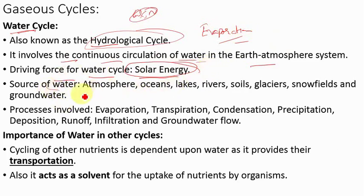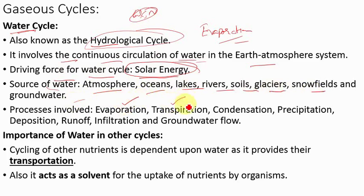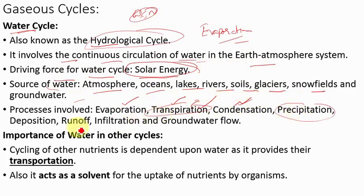The sources of water include the atmosphere, oceans, lakes, rivers, soils, glaciers, snowfields, and groundwater. The processes involved in the water cycle are: first, evaporation and transpiration — leaves of plants transpire and release water molecules, forming water vapor in the atmosphere. Then condensation takes place, cloud formation occurs, and after condensation, precipitation takes place. After precipitation, deposition occurs in the form of snow, runoff, infiltration, and groundwater flow. All these processes constitute the water cycle.